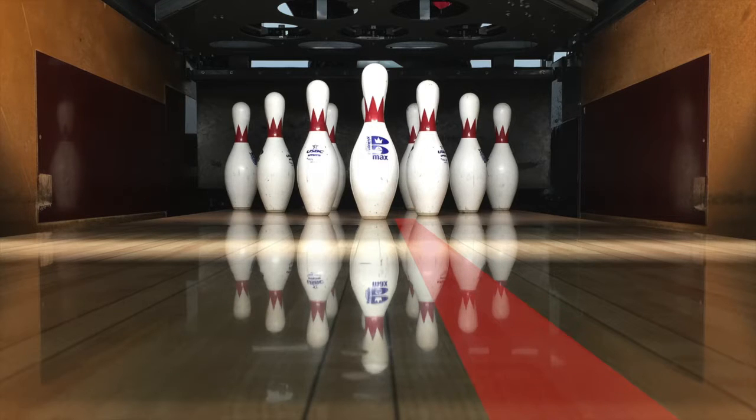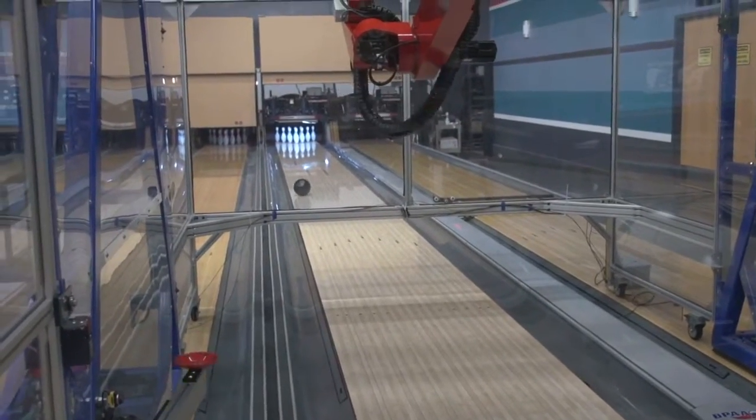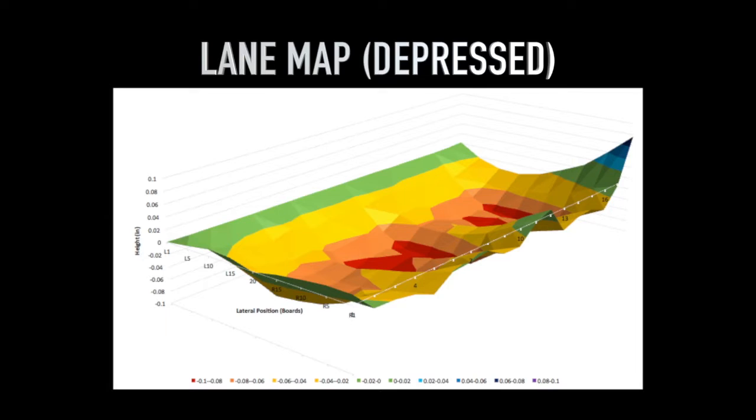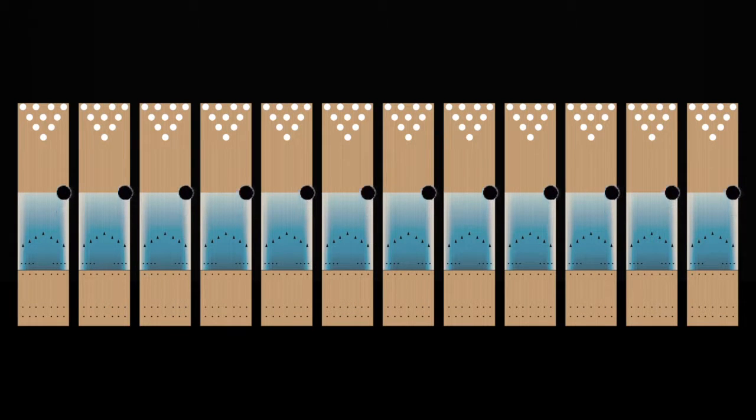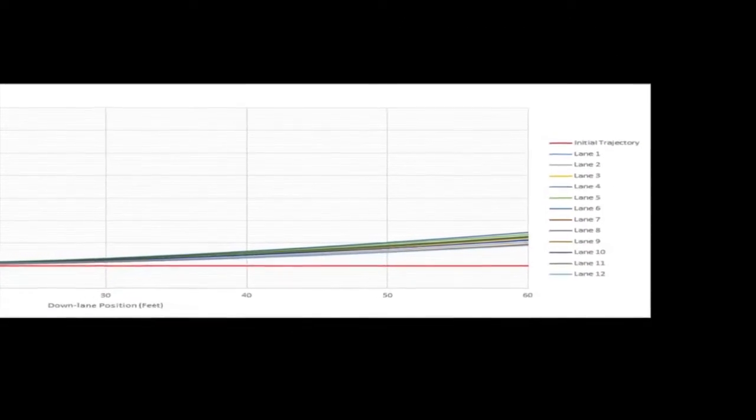Another way of measuring is to look at where the ball ends up when you throw shots on different parts of the lane. In a case where the lane is depressed, when we throw 12 identical shots on 12 different lanes down the fifth board on the right side, the lanes pulled the ball five to eight boards left of its original line.